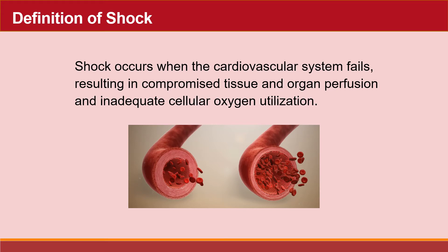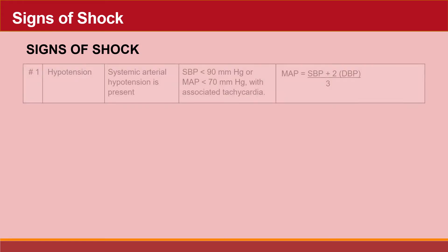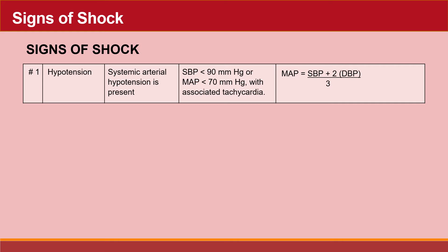So what is shock? Shock occurs when the cardiovascular system fails, resulting in compromised tissue and organ perfusion and inadequate cellular oxygen utilization. The three key signs of shock: Number one, hypotension — systemic arterial hypotension with an SBP less than 90 mmHg or an MAP less than 70 mmHg with associated tachycardia. MAP can be calculated by taking the systolic blood pressure, adding it to two times the diastolic blood pressure, then dividing the sum by three.